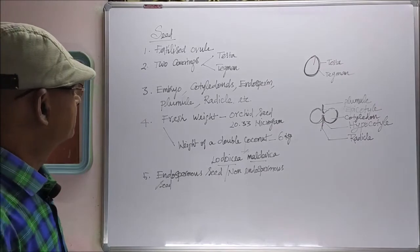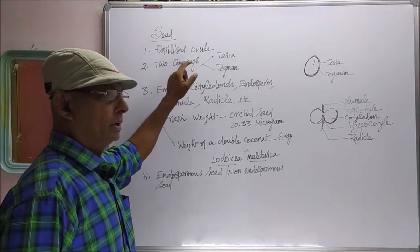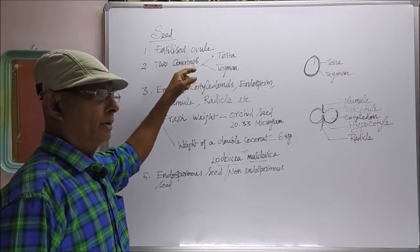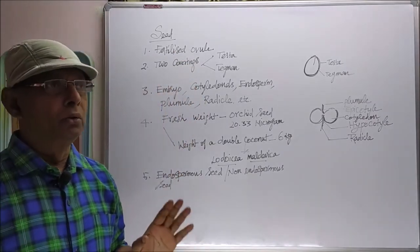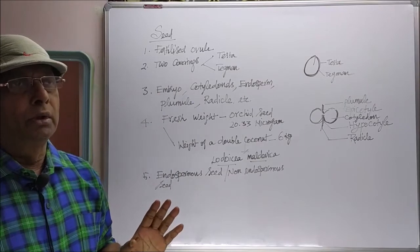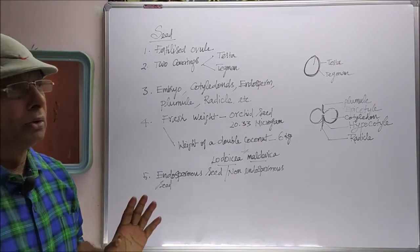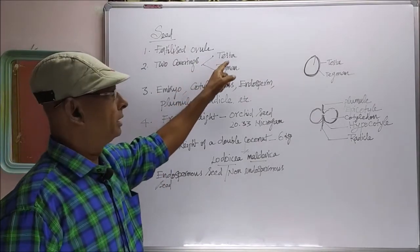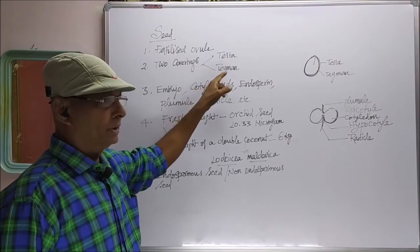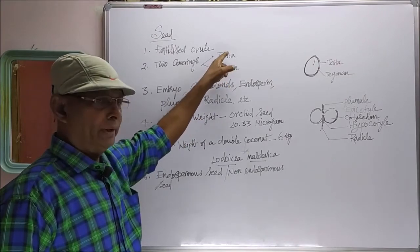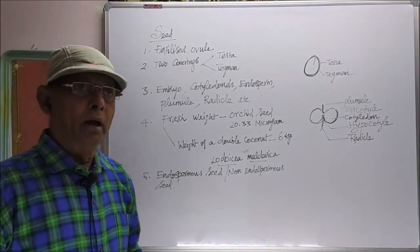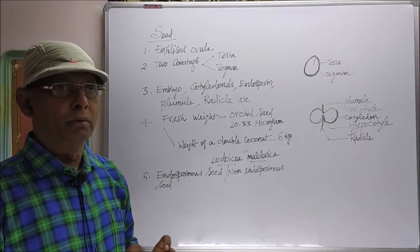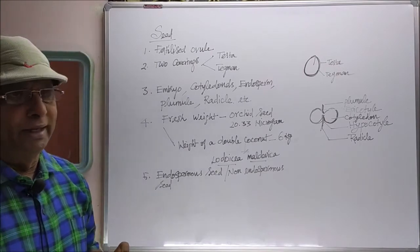The seed has two coverings: outer covering and inner covering. Each seed is well protected by these two coverings. The outer covering is called testa, and the inner covering is called tegmen. Testa is very tough, very hard, and is the hard protective outer covering of the seed.